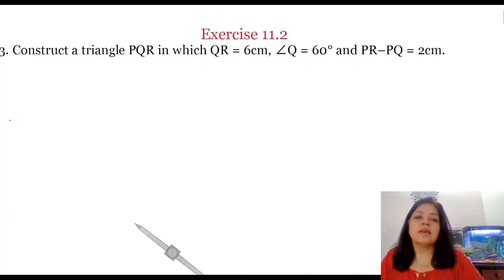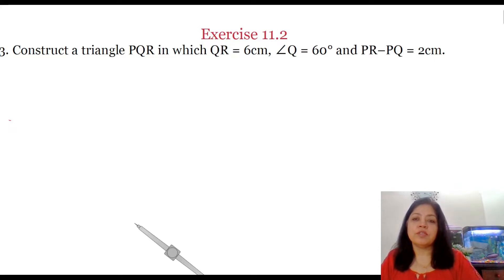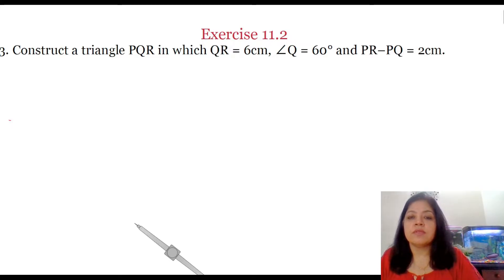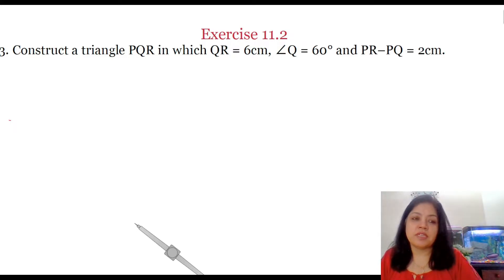Hello students, I am Hema and in this video I am going to do question number 3 of exercise 11.2 NCERT class 9th maths. The question is: construct a triangle PQR in which QR is equal to 6 cm, angle Q is equal to 60 degrees, and PR minus PQ is equal to 2 cm.